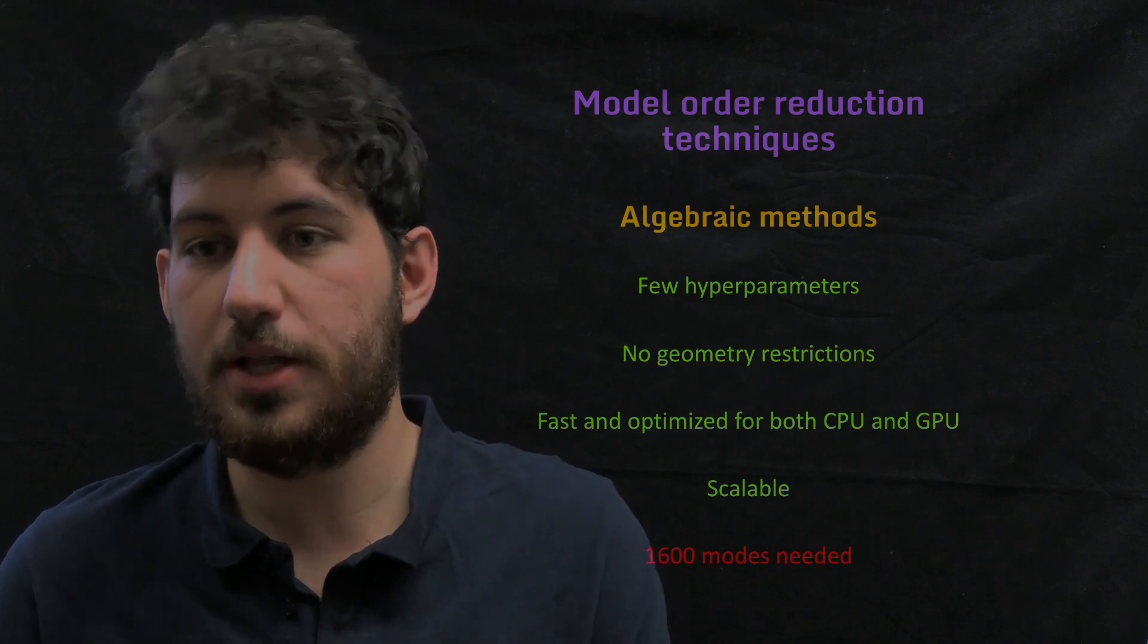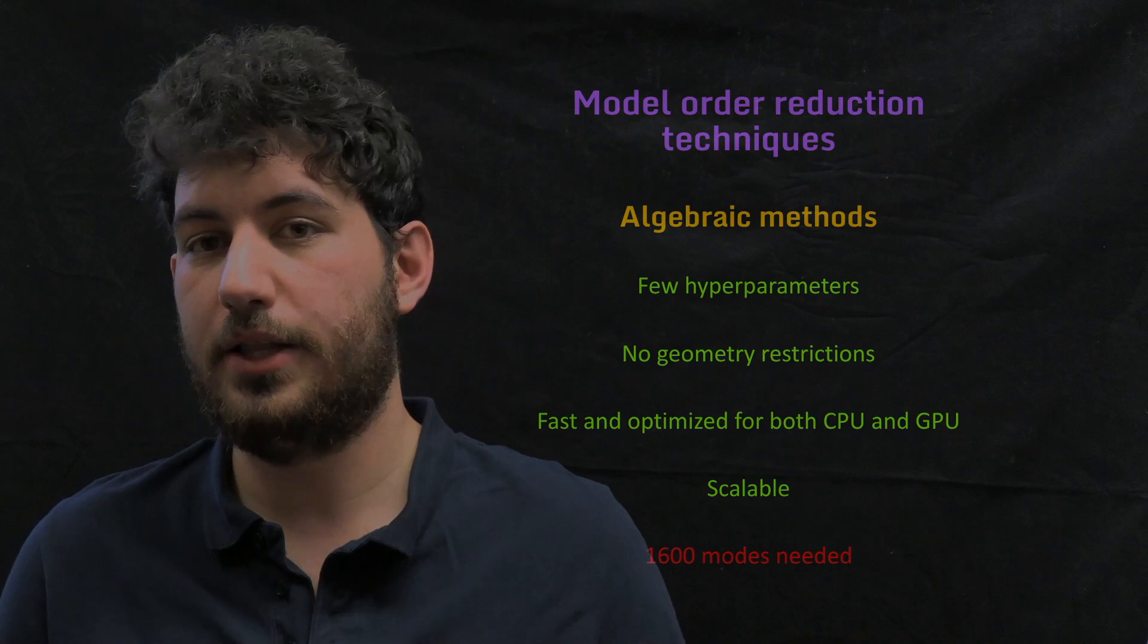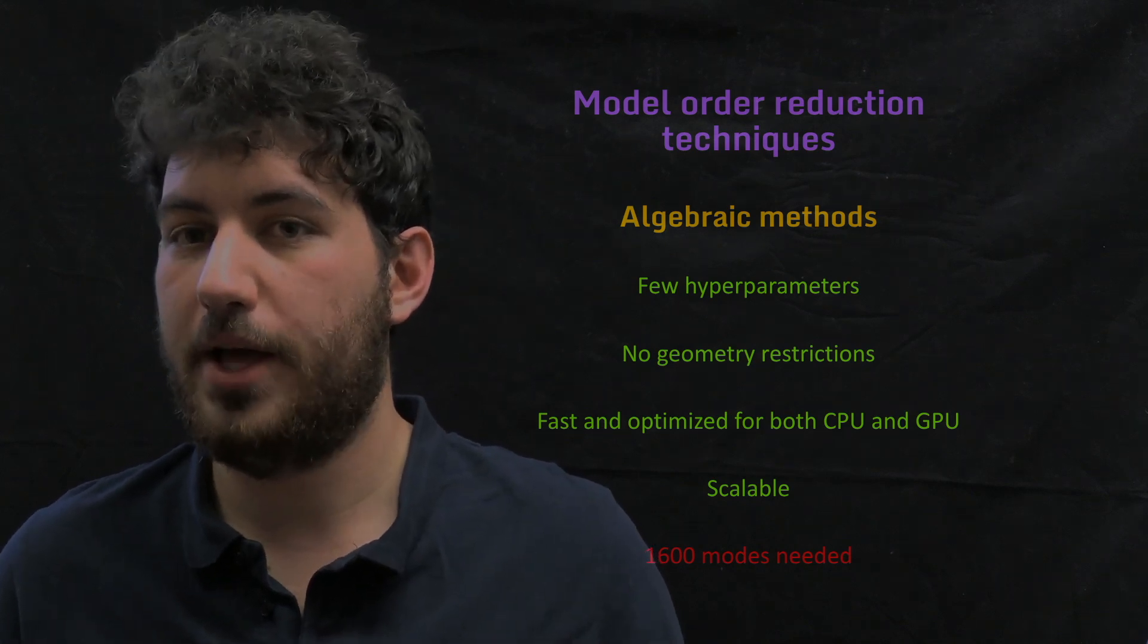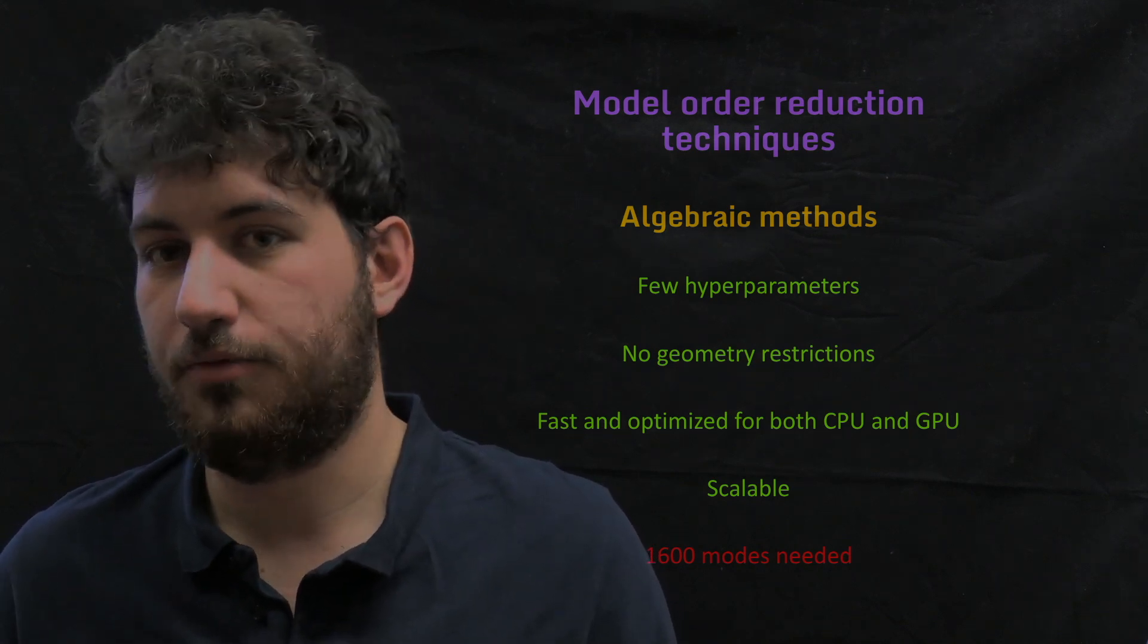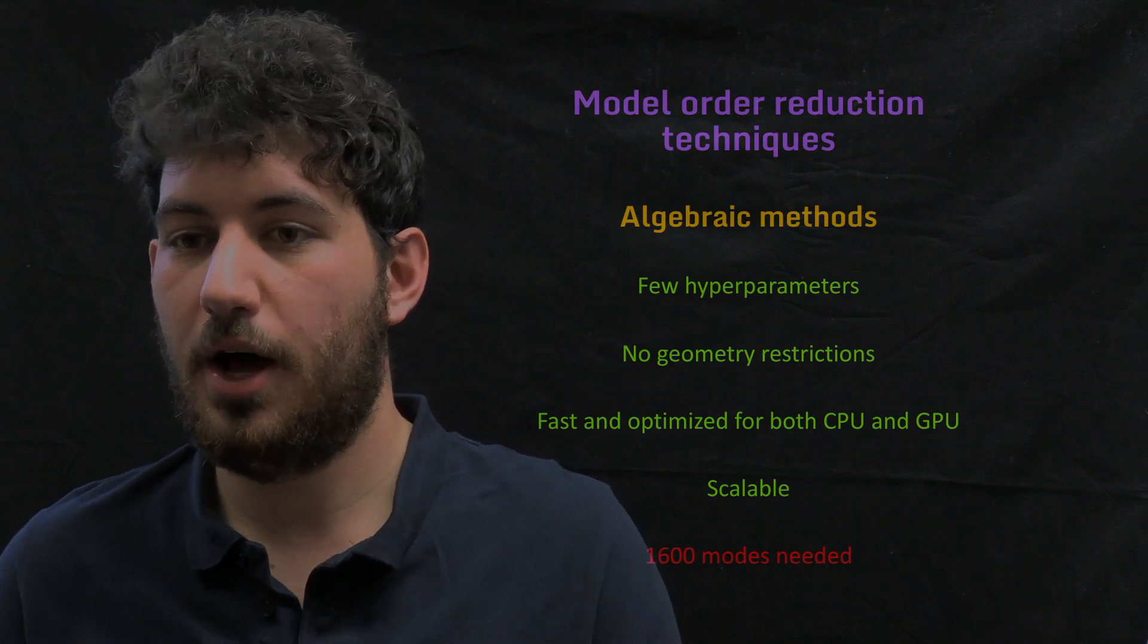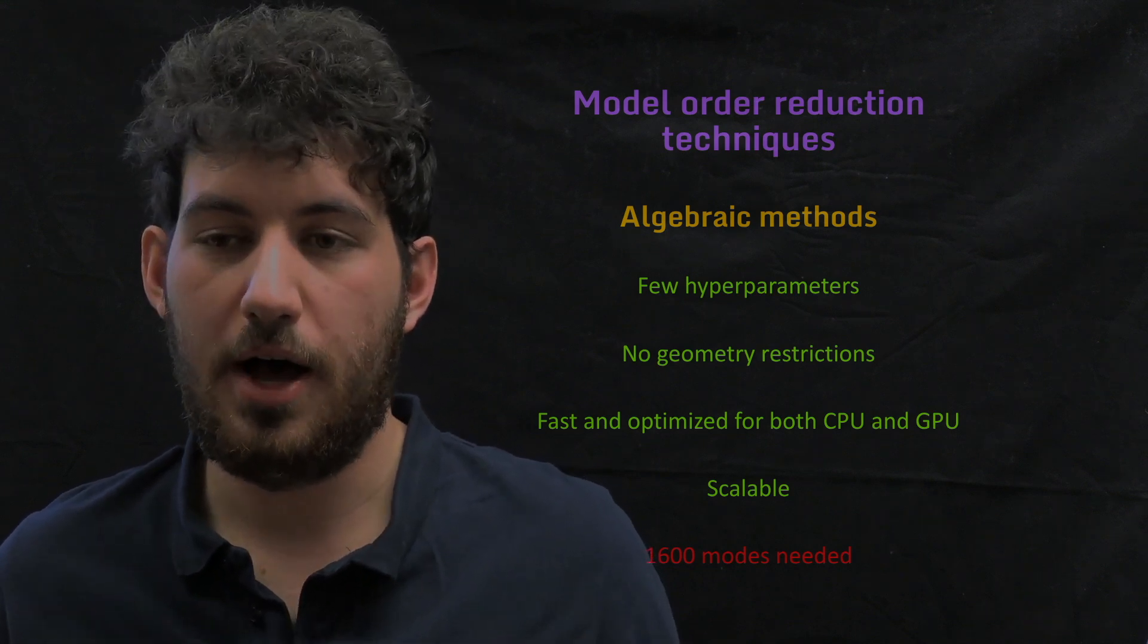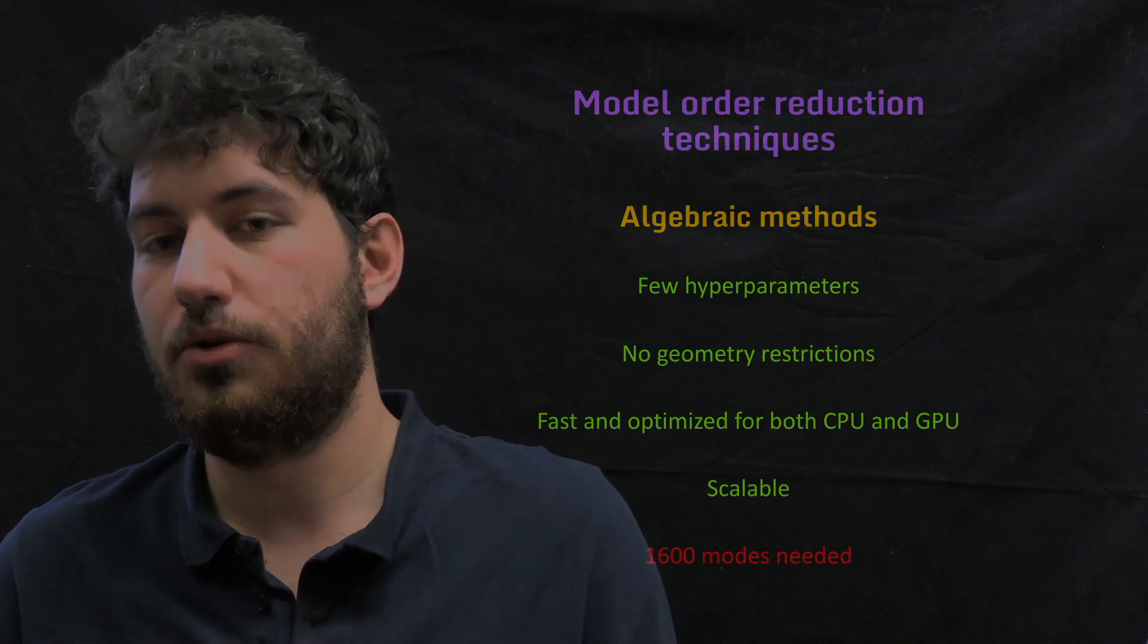The only downside that they have is that they need to retain lots of modes and the latent space is still too big after applying this dimensionality reduction, at least for turbulent flows. So in the case that I'm focusing in this video, we would need like 1600 modes to have a reduced order model that doesn't lose energy at all.